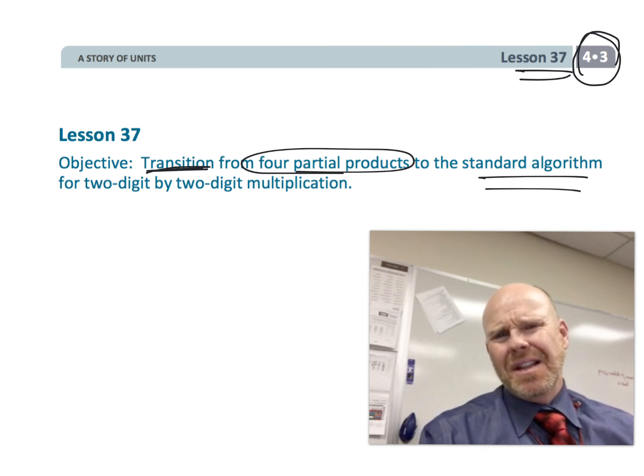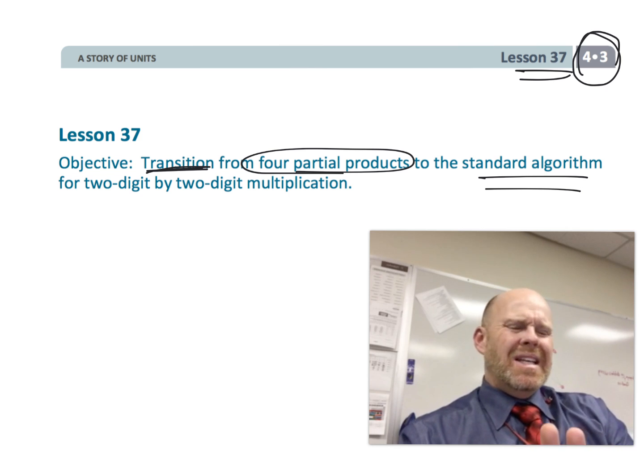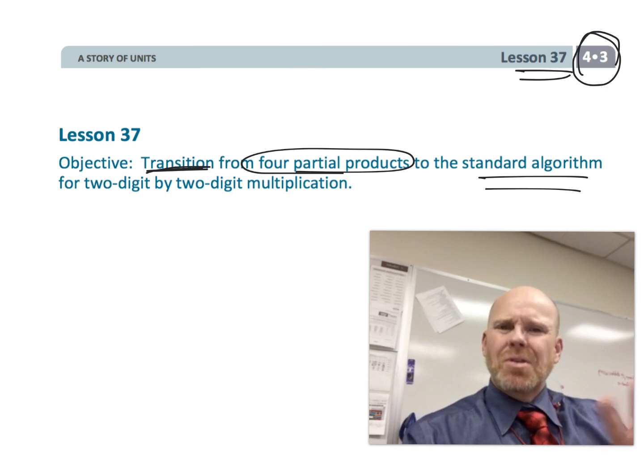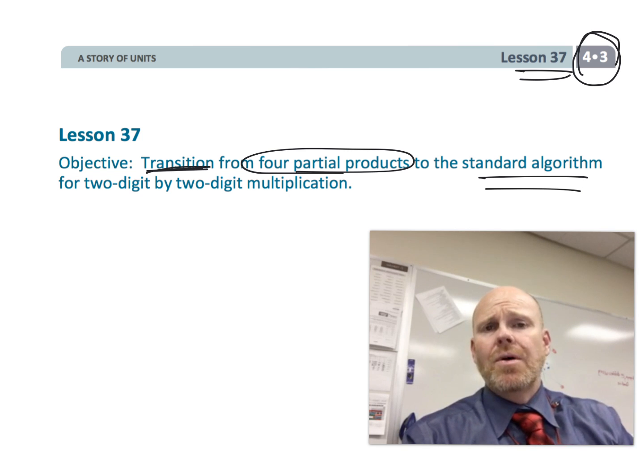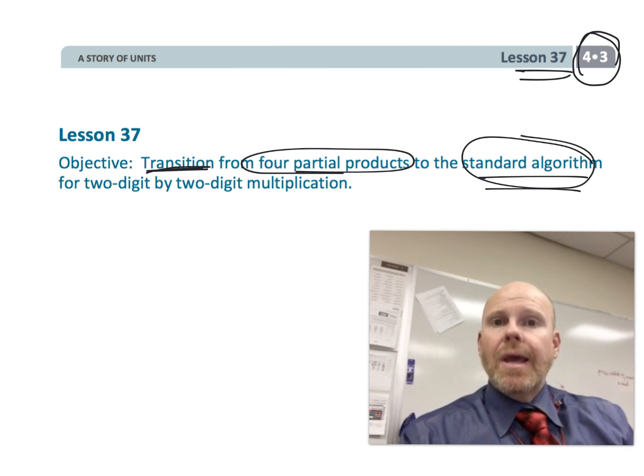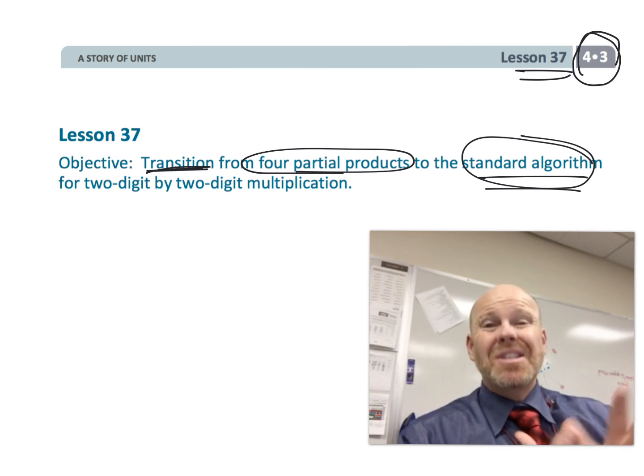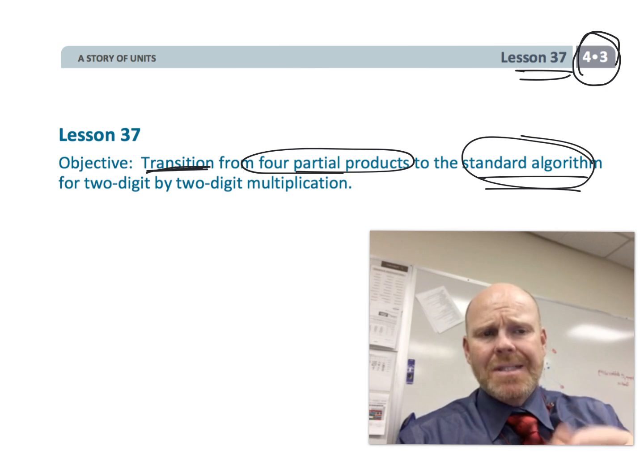students are going to be trying to transition from that area model where the students are coming up with four partial products, and we're trying to transition to that standard algorithm, which really is just two partial products. This lesson is a little clunky. It's a little odd how students are supposed to be showing their work. It is absolutely not the standard algorithm, even though the objective says it is, but that's okay. Get through this lesson. It'll be fine, and if you want, if students still prefer the area model, go ahead and use the area model, but let's get going on this.